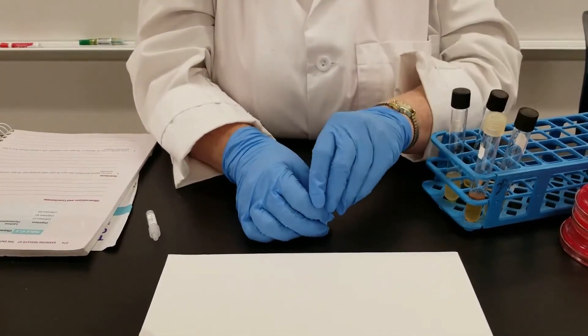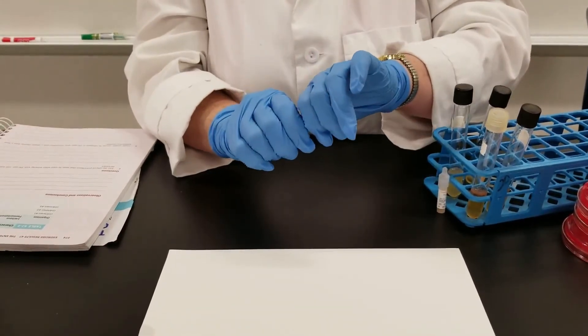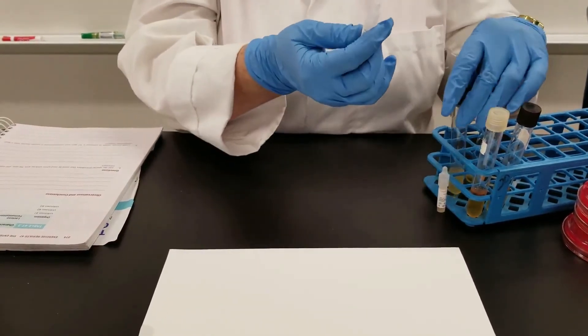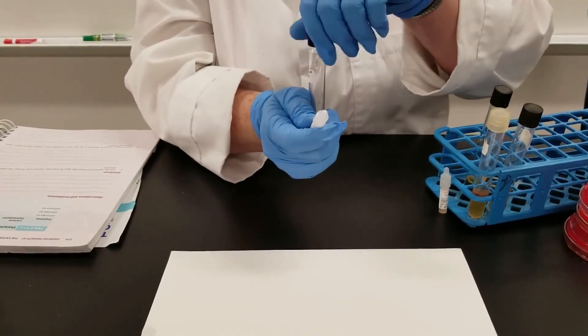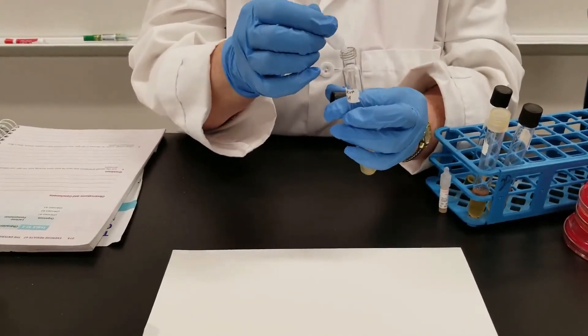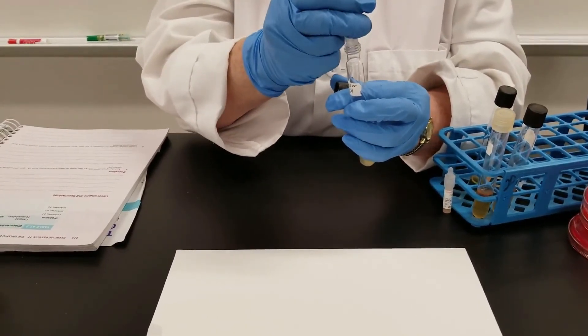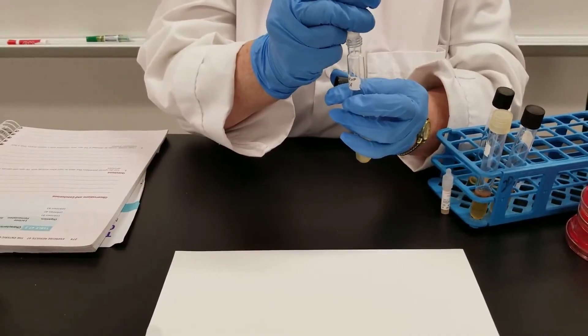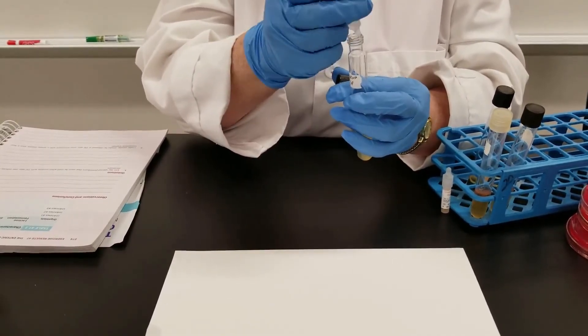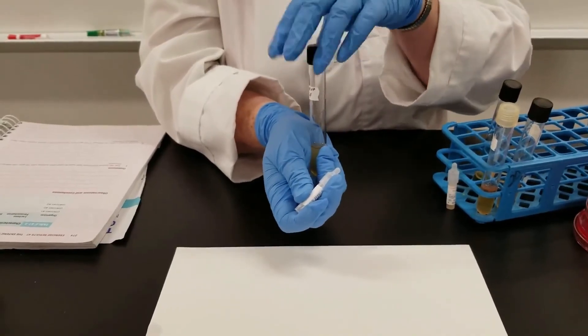Now you will add the reagent B. Once again, just squeeze it - that will pop the glass ampule on the inside. Once again, about ten drops. Add this to each one of the tubes. We are looking for a color change up on the top.